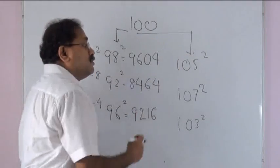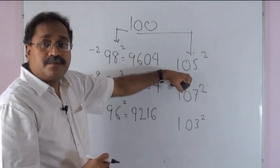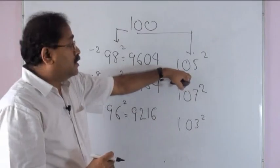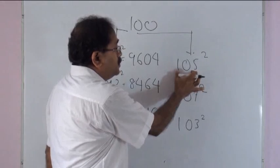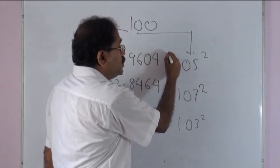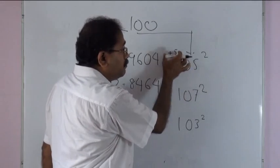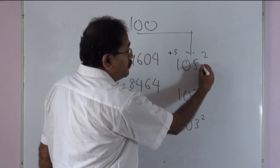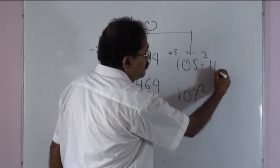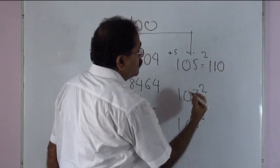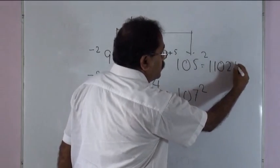Coming to numbers which are closer to 100 but greater than 100 — what is the approach? 105 is 5 more than 100, therefore 105 plus 5, that is 110, followed by 5 squared, which is 25. So 105 squared equals 11025.